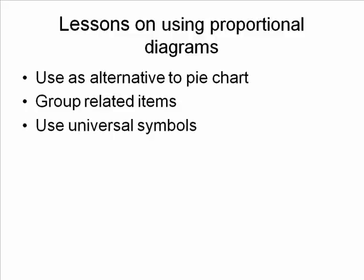Universal symbols are also a great thing to use in proportional diagrams. In this one, they used the symbol of a desk and two colors. Red is normally a warning color — stop, that sort of thing — and the light blue was a nice contrast with the background. Think about universal symbols like a check mark and an X, or a happy face and a sad face — things that are universal, that people understand, and that relate to what you're talking about.